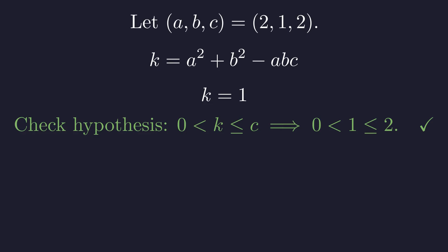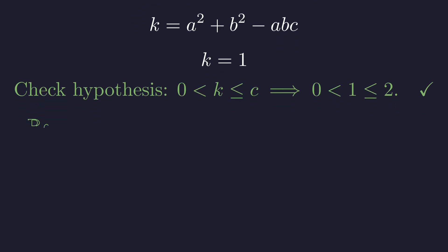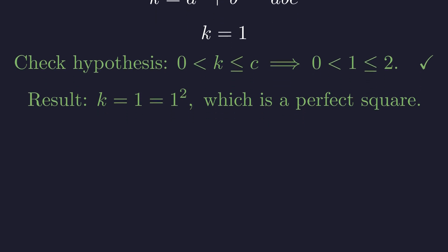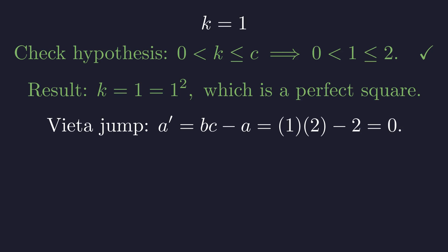We must check our constraint. Is k between 0 and c? Yes, 1 is between 0 and 2. This is a valid triple. And as our theorem predicts, k equals 1 is indeed a perfect square. Interestingly, if we apply the Vieta jump to this solution, the other root a prime is 0. This is exactly what our case analysis predicted would happen when k is a perfect square.